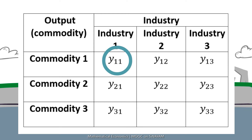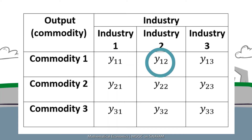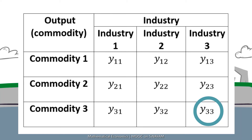Y11 is the total quantity of the first commodity needed as an input in the production of the first industry. Y12 is the total quantity of the first commodity needed as an input in the production of the second industry. Y33 is the total quantity of the third commodity needed as an input in the production of the third industry. In the same way you can interpret the other elements in the other cells.